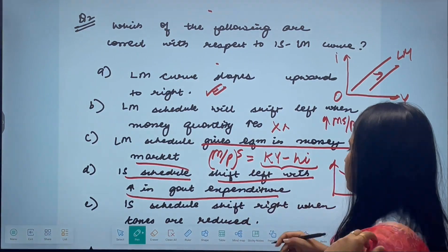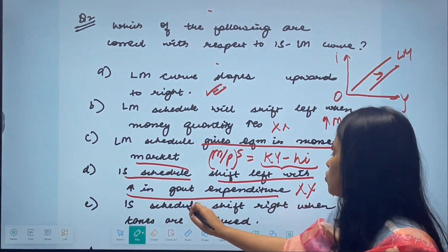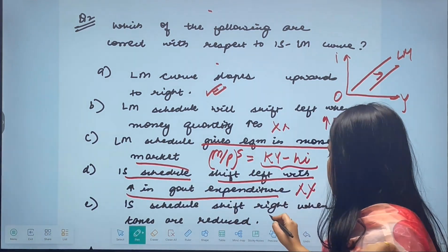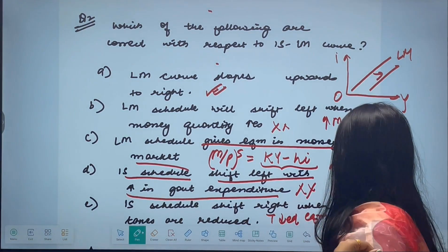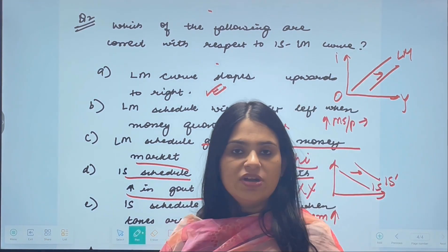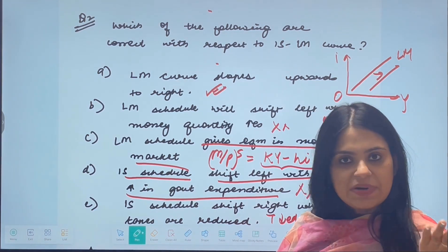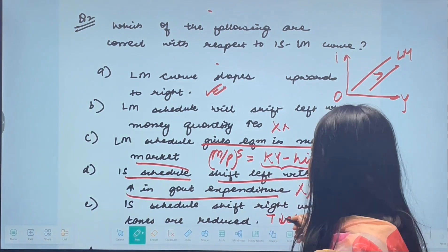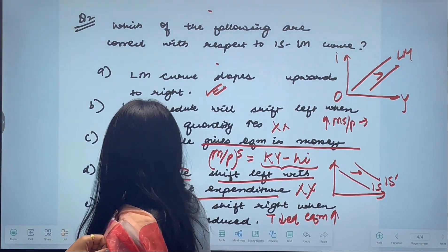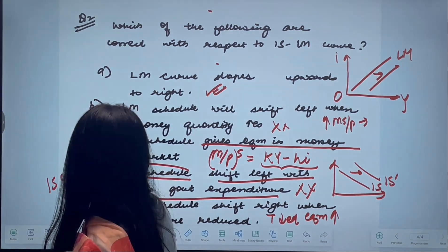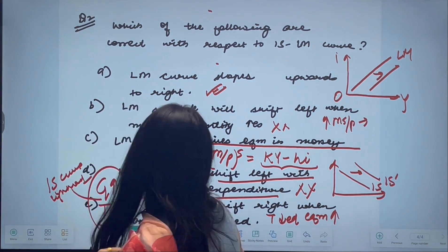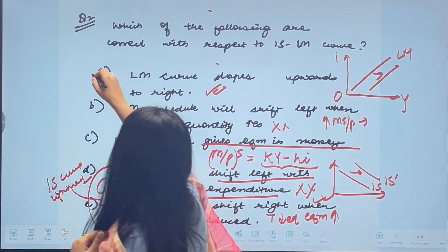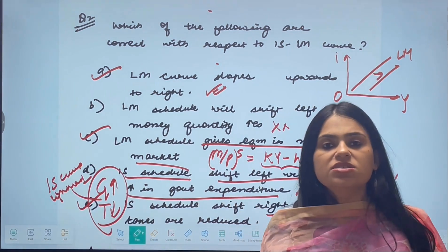The fifth option says the IS schedule shifts right when taxes are reduced. This is correct. When taxes are reduced, equilibrium income increases (holding interest rate constant), so the IS curve shifts rightward. Similarly, when government expenditure increases, income rises and the IS curve shifts rightward. So the correct statements in this question are A, C, and E.